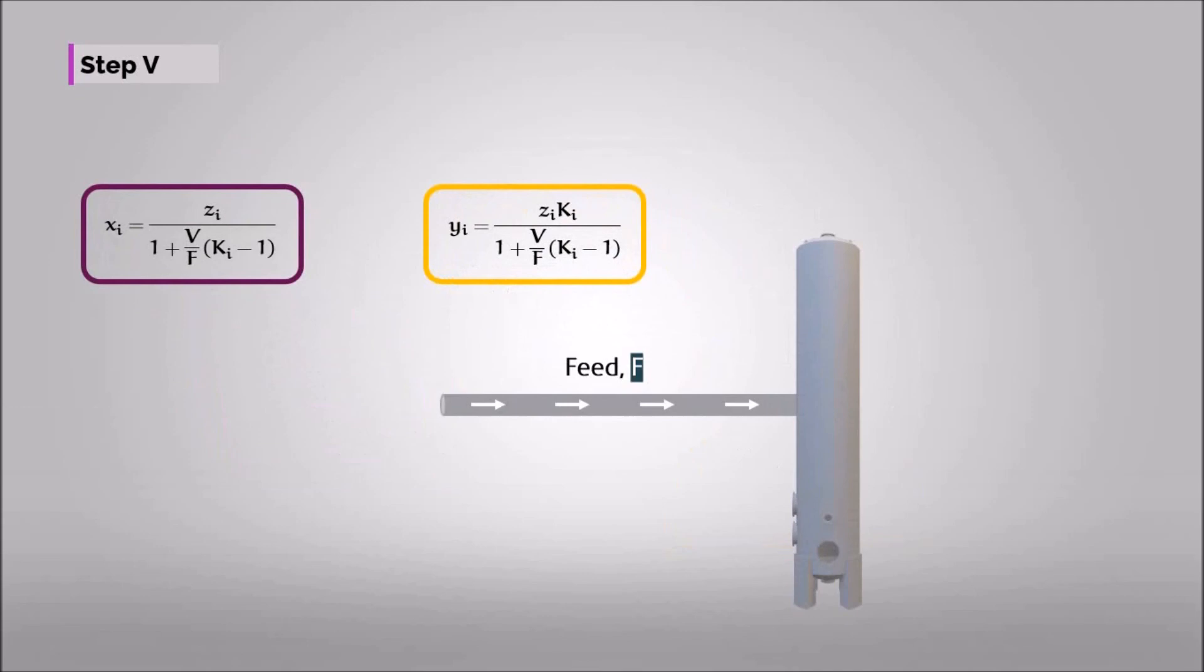And finally, the V over F value is used to reveal the gas and liquid molar flow leaving the separator. And ultimately, each contributing component of vapor and liquid phases can be found by using these formulas.